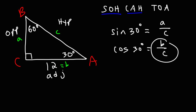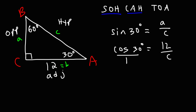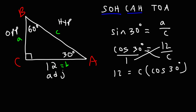We can use the cosine formula because we know B = 12 and we need to calculate C. Writing cosine 30 = 12 over C and cross-multiplying gives us 12 = C times cosine 30. Cosine 30 degrees equals the square root of 3 over 2, which is approximately 0.866.